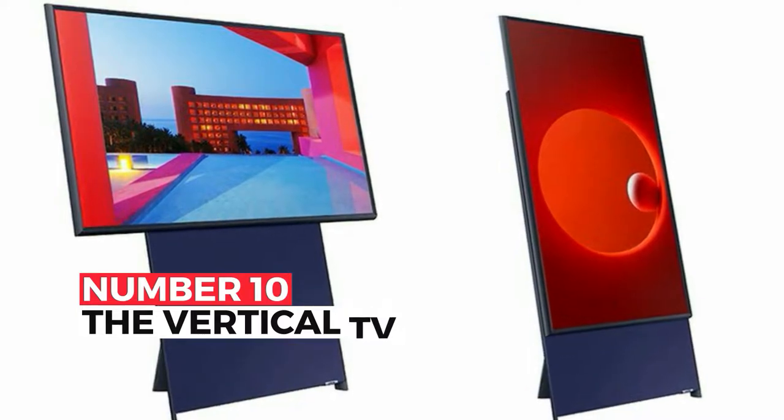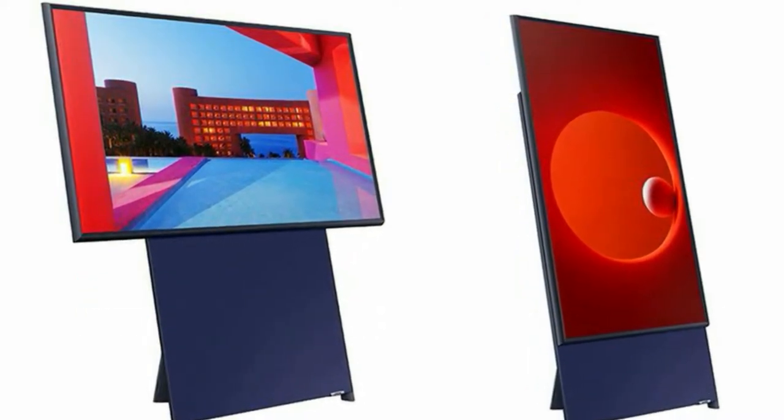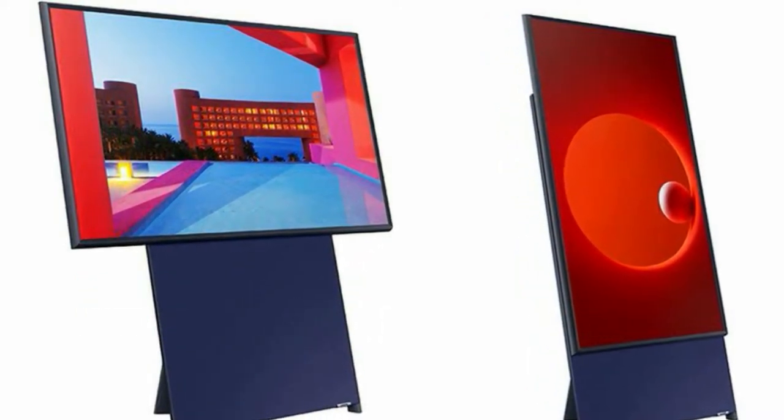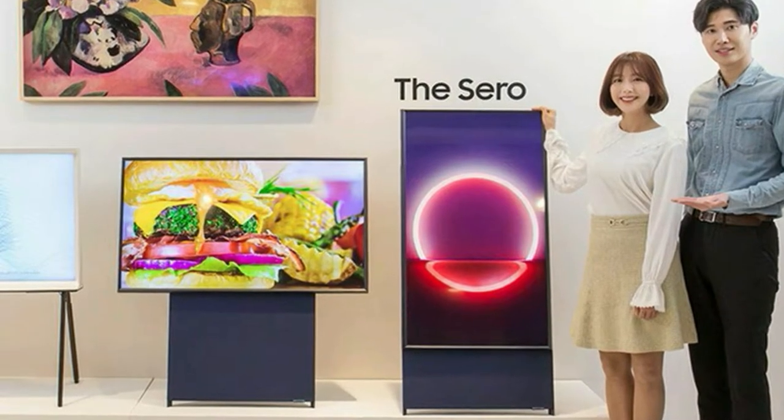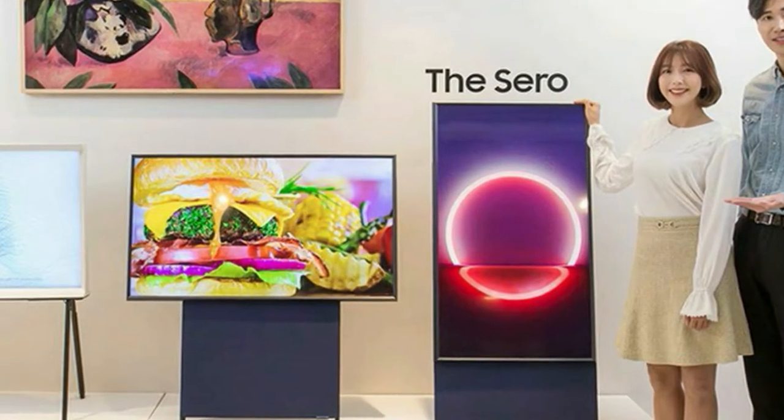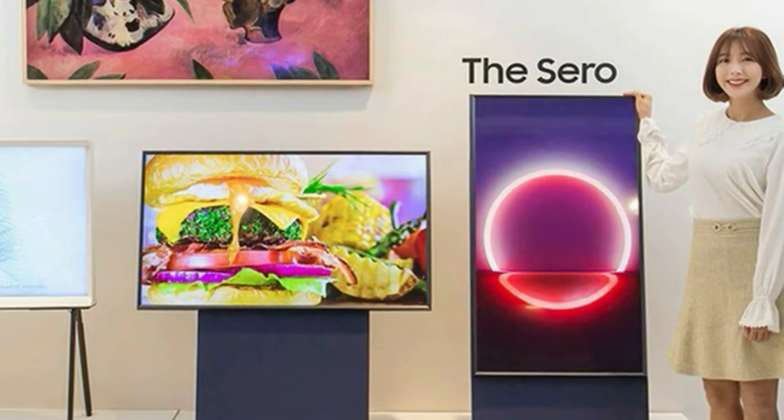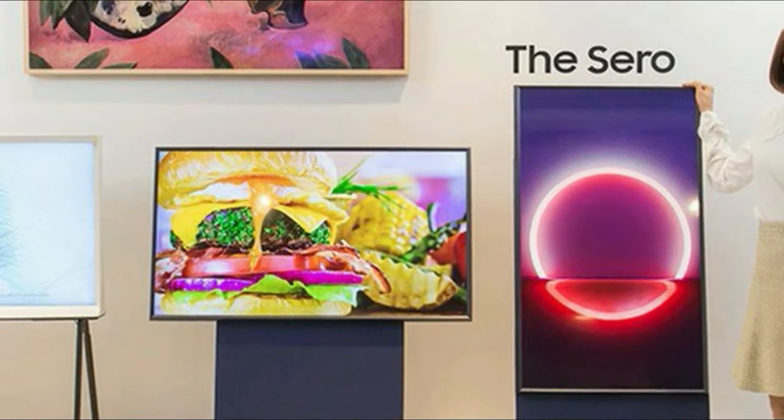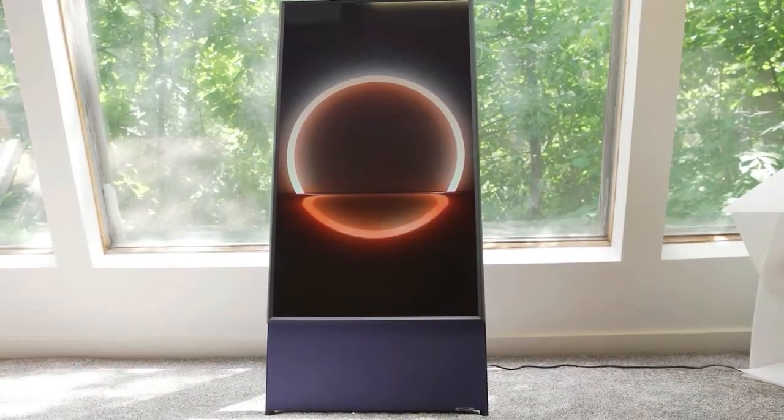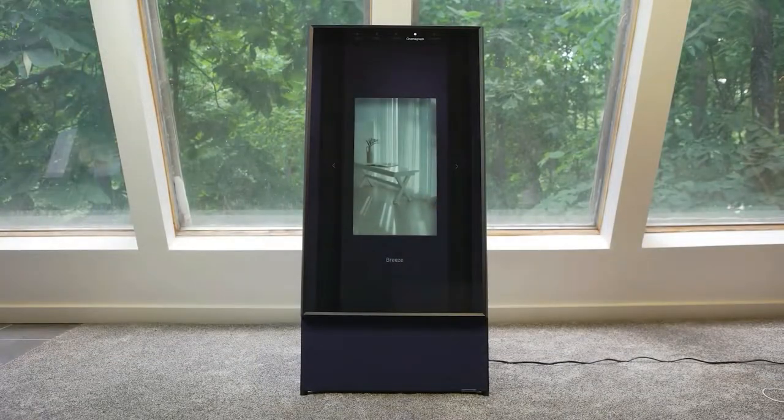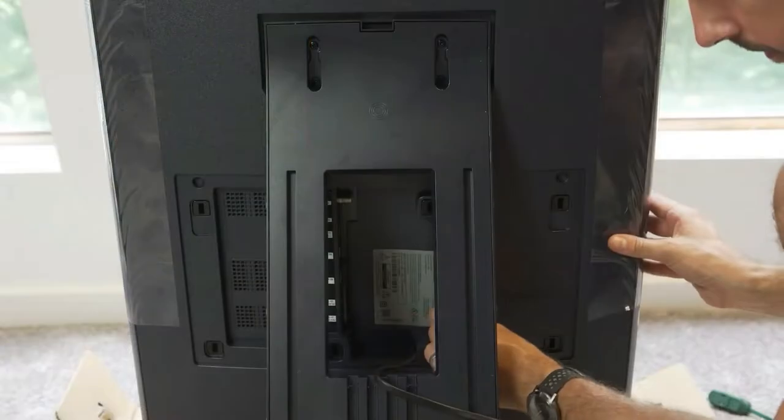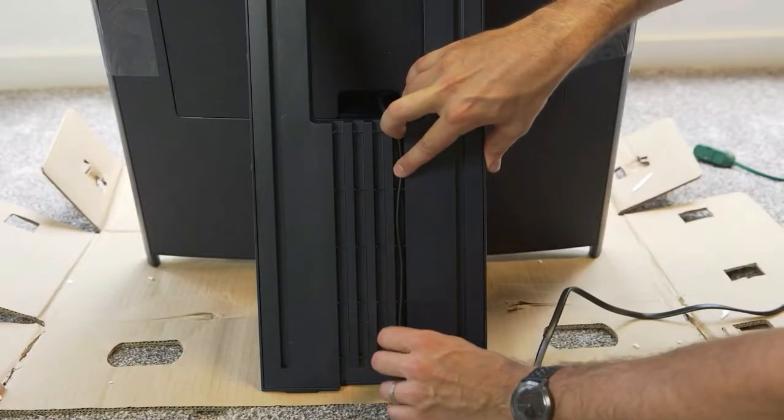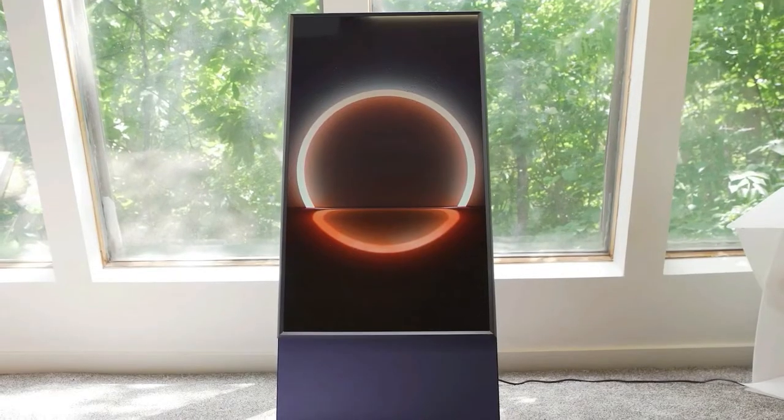Number 10. The Vertical TV. The Seiro isn't like other televisions that you've seen before and that might be because Samsung didn't design it with just TV viewers in mind. The 43-inch TV pivots from a horizontal to a vertical orientation with a click of the remote. Its design is optimized to accommodate social media posts, streaming services, and even gaming, the kind of content that you may be more familiar with viewing in vertical formats on your phone. The Seiro also has optional wheels, so it can be moved anywhere around the house.